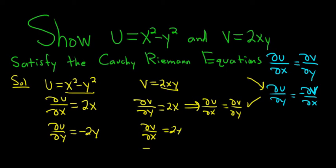That would mean that negative del v del x is equal to negative 2y. So this implies that del u del y is equal to negative del v del x.